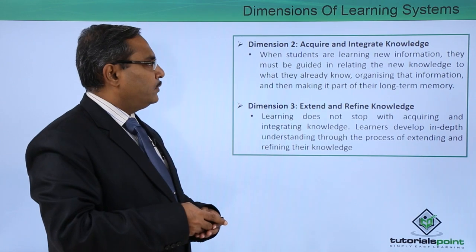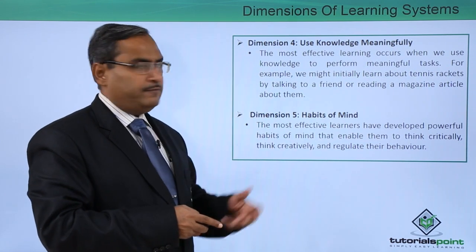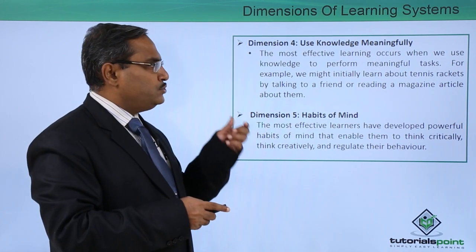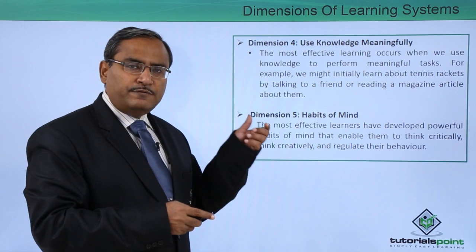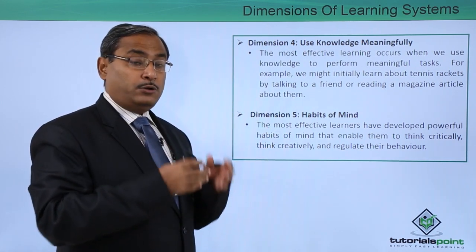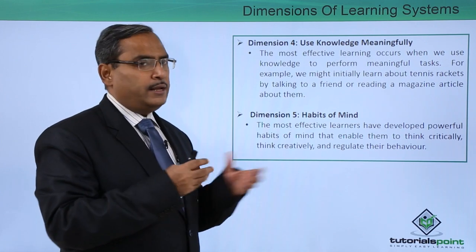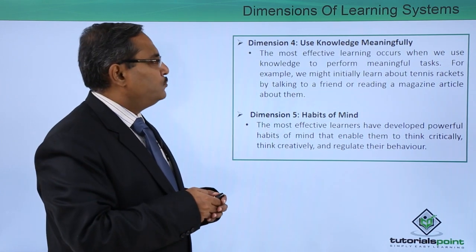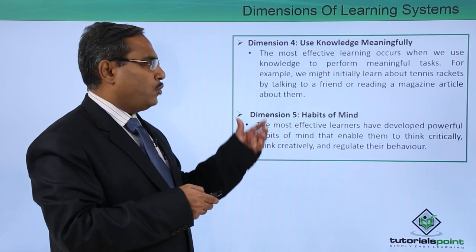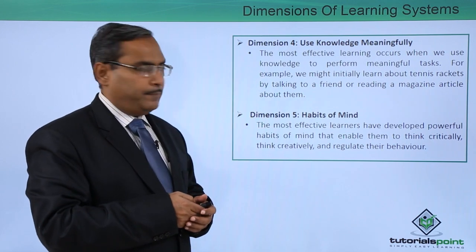Dimension number four is use knowledge meaningfully. The most effective learning occurs when we use knowledge to perform some meaningful tasks. We might have different knowledge, but knowing which knowledge to apply to a given task in a meaningful way is a great skill. For example, we might initially learn about tennis records by talking to a friend or reading a magazine article.